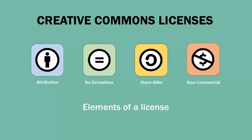The third element of Creative Commons licensing is share alike. The share alike stipulation requires users share any new derivative works with the same Creative Commons license as the original. For instance, if you built upon a work that had a CC BY share alike license, you would be required to share your new work with a CC BY share alike license as well.